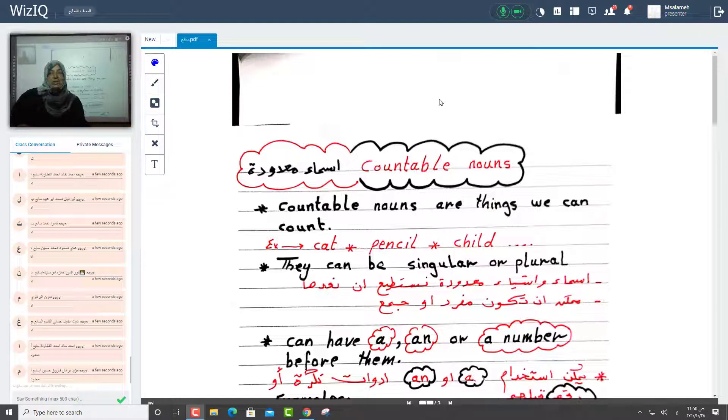Sometimes we use before them articles like a or an or a number. What about uncountable things? The nouns. We can't count them like water, sugar, coffee, milk.